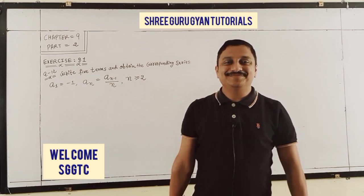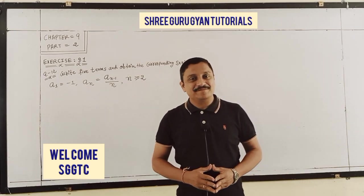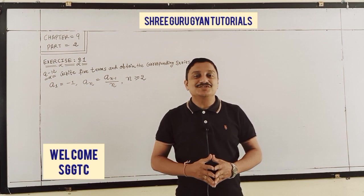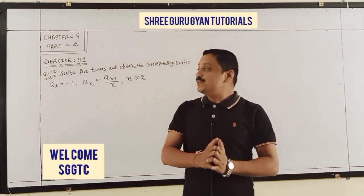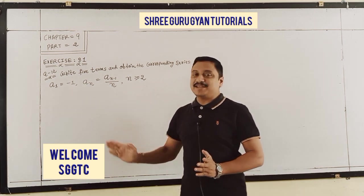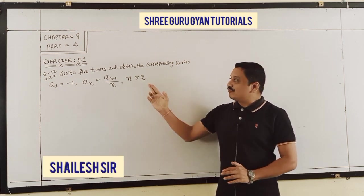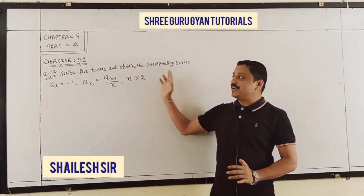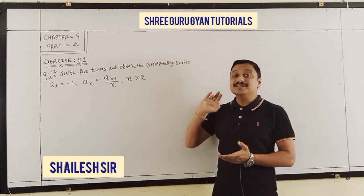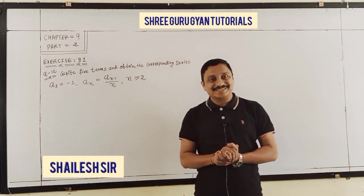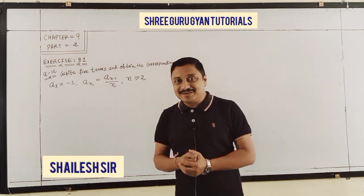Hello students, welcome again to Chapter 9: Sequence and Series. Today we continue our Exercise 9.1, Question number 12. Find the first 5 terms and corresponding series given the formula for a(n), with a1 also given.